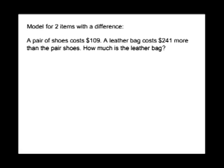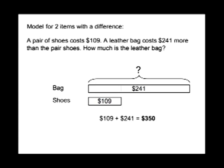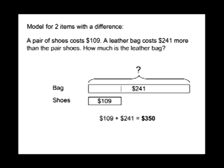Our next example, we're going to model two items with a difference. A pair of shoes costs $109. A leather bag costs $241 more than the pair of shoes. How much is the leather bag? Our shoes are $109, and the leather bag costs $241 more than the pair of shoes. So $109 plus $241 equals $350 — the leather bag is $350.